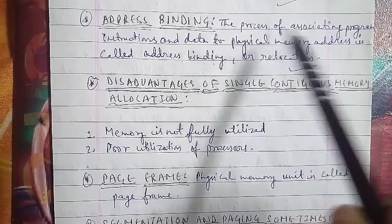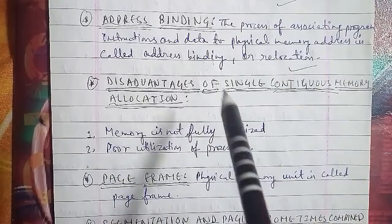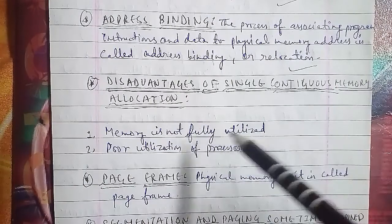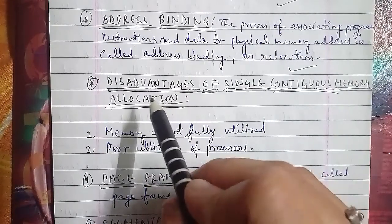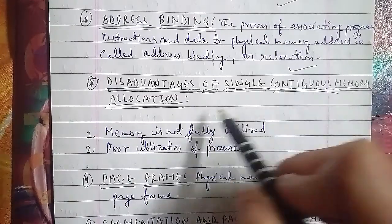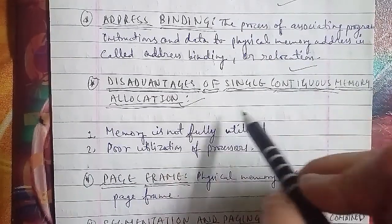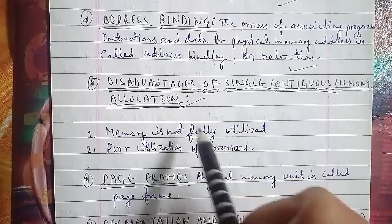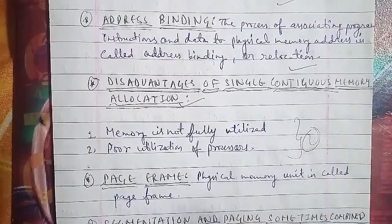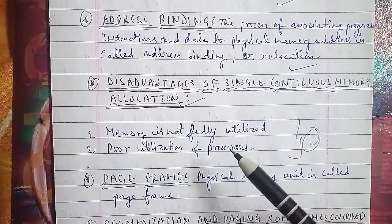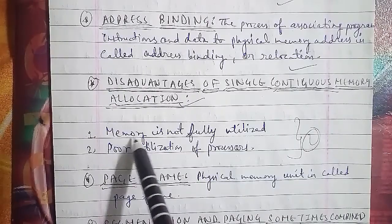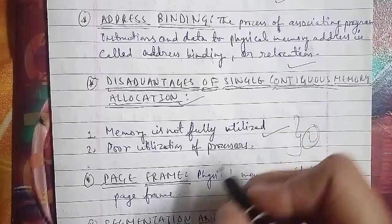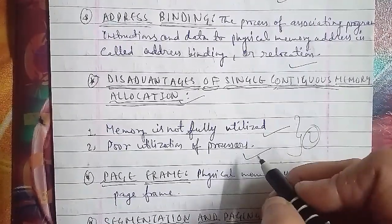Disadvantages of single contiguous memory allocation: there are two disadvantages. First, memory is not fully utilized. Second, poor utilization of the processor. These are the two disadvantages of single contiguous memory allocation.